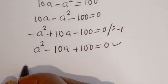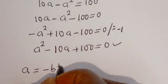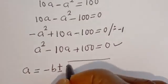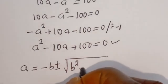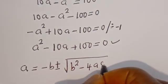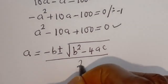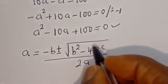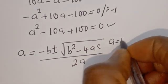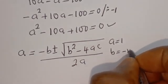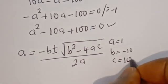Let's solve this using the quadratic general formula: a equals negative b plus or minus the square root of b squared minus 4ac, all divided by 2a. From this equation, the coefficients are: a equals 1, b equals negative 10, c equals 100.